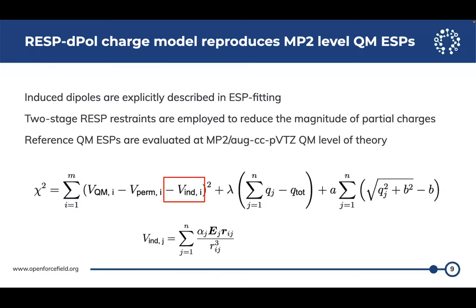A little more detail on the charge model: this is a standard RESP-fitting objective function. What is different is that we include the induced electrostatic potential from the induced dipole — circled here — which is the induced polarization contribution. The polarizabilities act at the atom centers, responding to the local electric field. Since we're using direct polarization, the electric field E is generated by the permanent charges, with no self-consistent solving involved. So even though it looks complicated, it's actually a simpler process to solve for the RESP-style charges in the context of polarization.